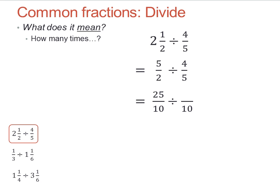Five on two is twenty-five on ten. Four on five is eight on ten. Now it's just twenty-five divided by eight. Well, that's just three wholes and one left over. Three and one-eighth.